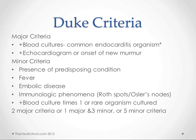We have some criteria for the diagnosis of infective endocarditis. So if you have a positive blood culture with a common endocarditis organism plus an echocardiogram that's positive for vegetations, then you've got a diagnosis. That's two major criteria.